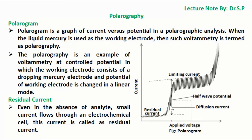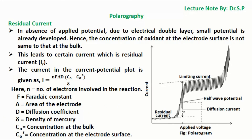Residual current: Even in the absence of analyte, a small current flows through an electrochemical cell; this current is called residual current. In the absence of applied potential, due to the electrical double layer, a small potential is already developed. Hence, the concentration of oxidant at the electrode surface is not the same as that in the bulk, which leads to a certain current known as residual current IR.